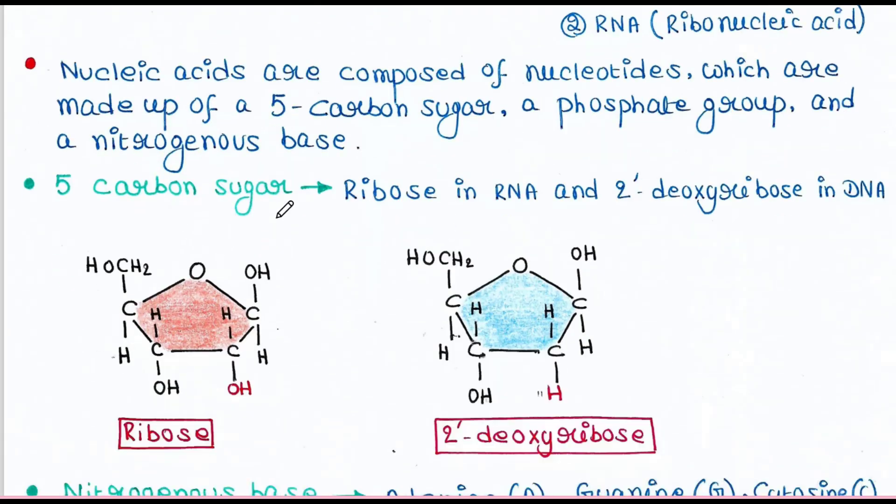So the 5-carbon sugar is ribose in case of RNA. This is the ribose sugar 1, 2, 3, 4, 5—five carbons are there, and the sugar is 2 prime deoxyribose in case of DNA.